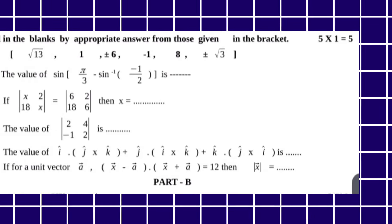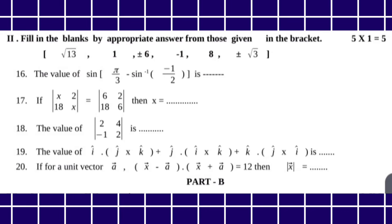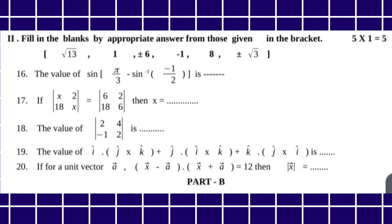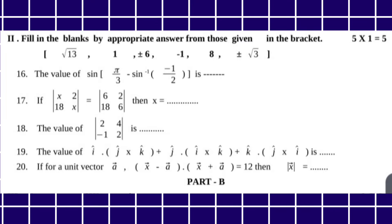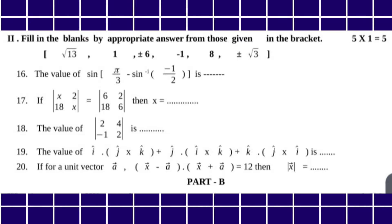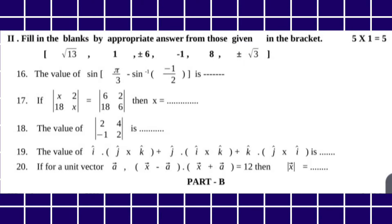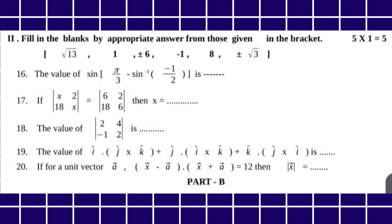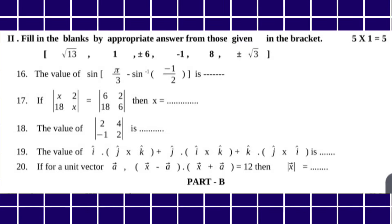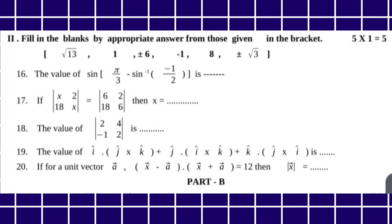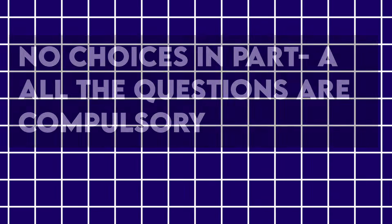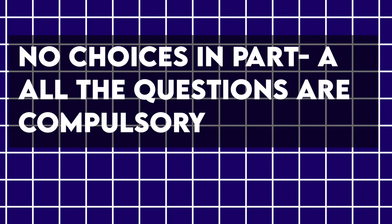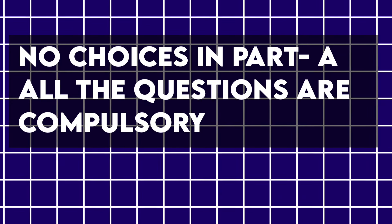The second section will be fill in the blanks. For fill in the blanks, you have 5 questions with 6 options. So you have 5 marks with 15 choices, and all 5 questions are compulsory. This part is important — you have 15 choices and all the questions are compulsory.